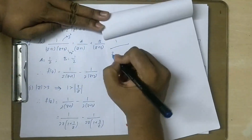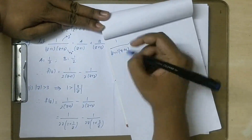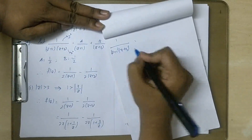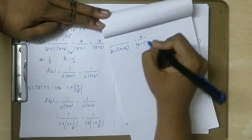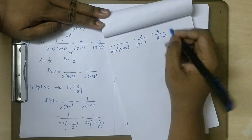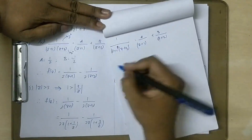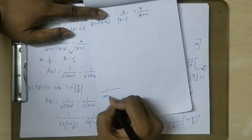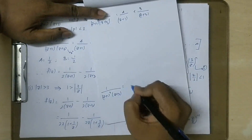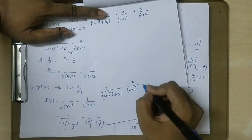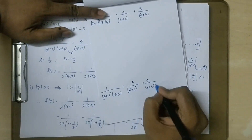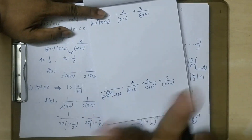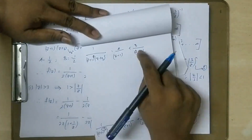So one by (z+1)(z+3) — that's how you split it. This is power single, meaning power one. So directly: A by (z+1) plus B by (z+3). Suppose it's one power square — for example, one by (z+1)² (z+3). Since this square is one square, so A by (z+1) and B by (z+3).